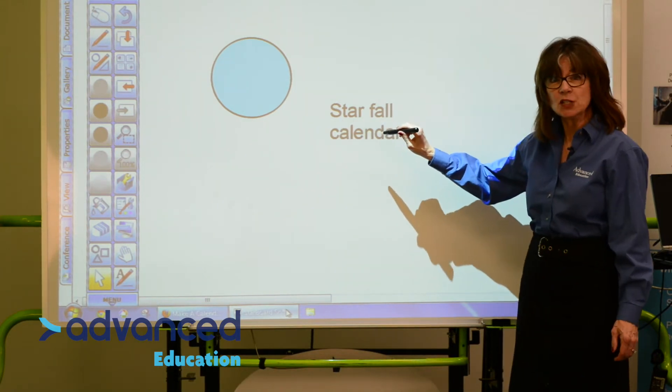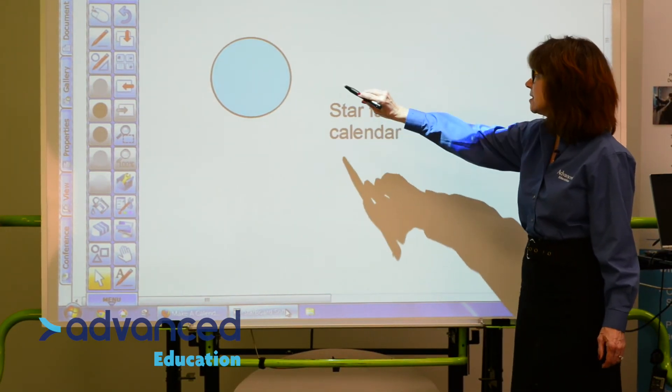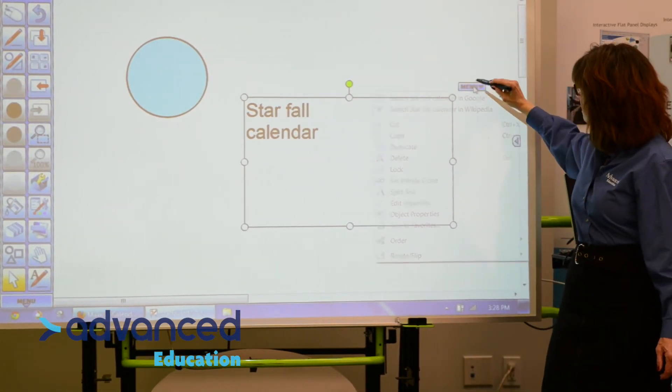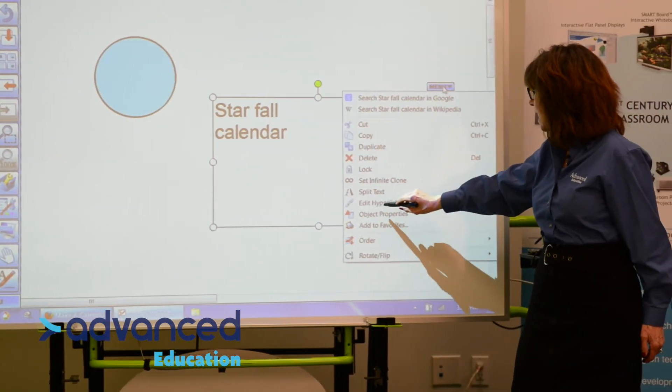And if you remember from the last one, we're going to click on the words instead of the circle. And there's a menu to the right here that we're going to click on. And choose Edit Hyperlink.